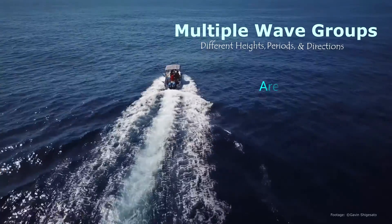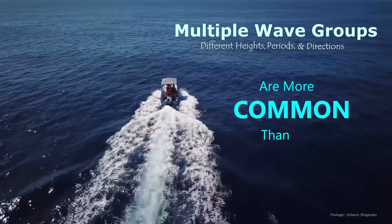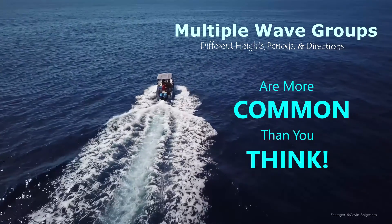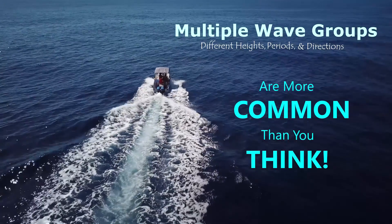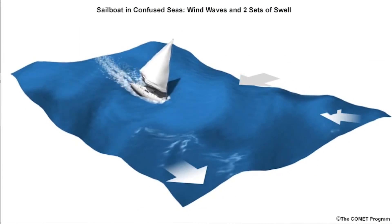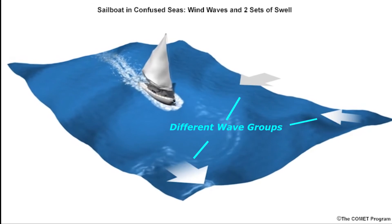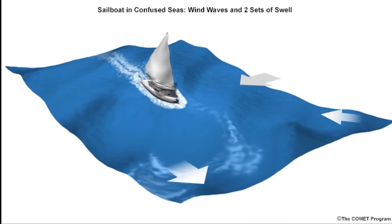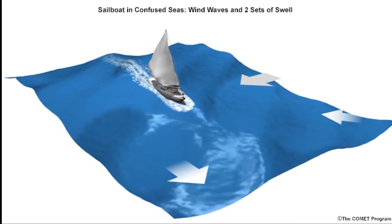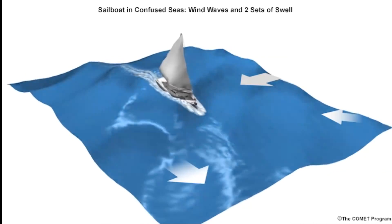In addition, it is common to have multiple coexisting wave systems passing through a particular point or region in the ocean. All of these different wave groups can have different heights, periods, and directions, and thus have very different impacts on vessel behavior and breaking wave characteristics in the surf zone.